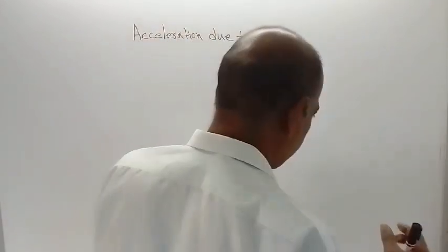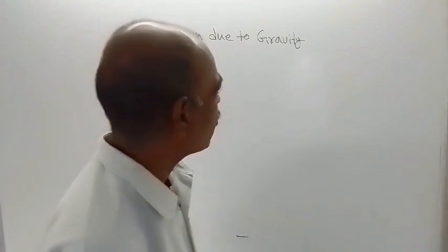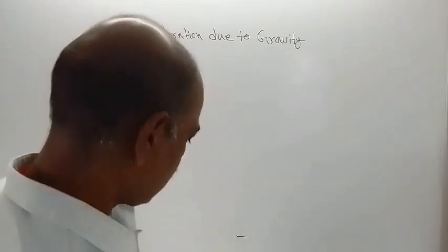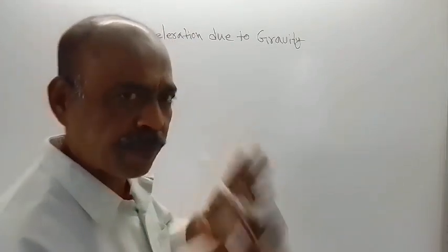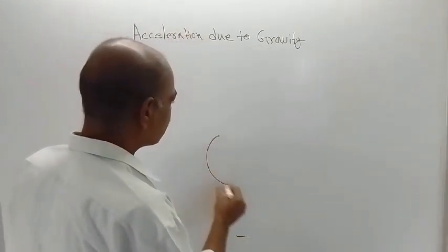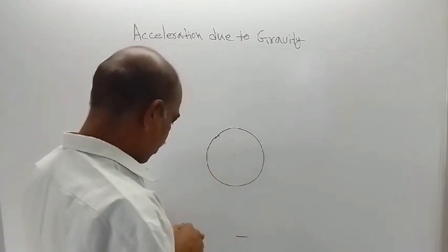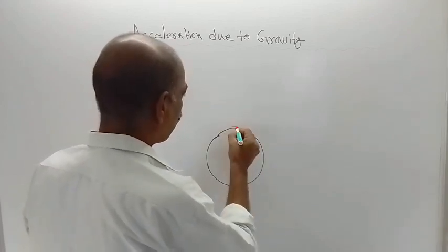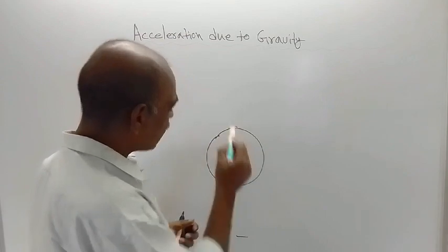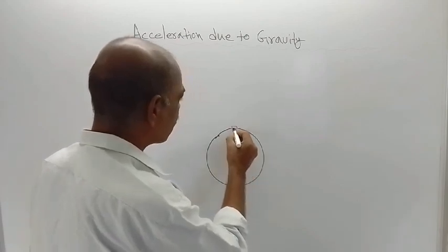When two objects attract each other, they equally apply force on each other — the force of attraction is the same for both bodies. Here we are considering our planet Earth and an object kept on the surface of the earth. Suppose this is the earth, this is the center of the earth, and somewhere here an object is kept.